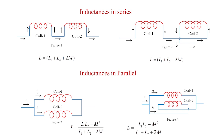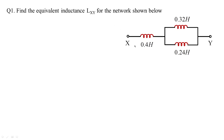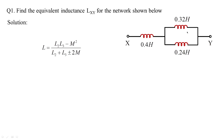Let us proceed to the numericals. The first problem asks us to find the equivalent inductance between X and Y. There are two inductors connected in parallel, and the arrangement is in series with 0.4 H. The formula for parallel inductance is L = (L2·L3 − M²) / (L2 + L3 ± 2M). Since no mutual inductance value is given, we treat M = 0, and we assume L1 = 0.4 H, L2 = 0.32 H, and L3 = 0.24 H.